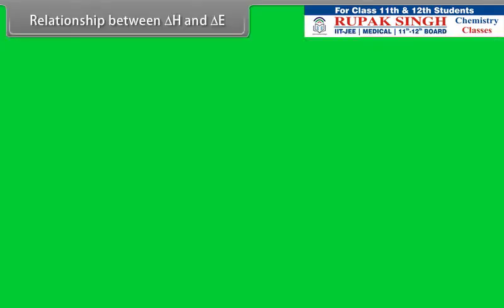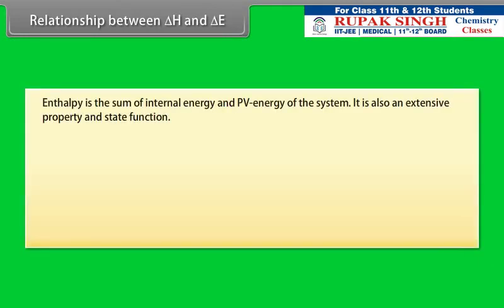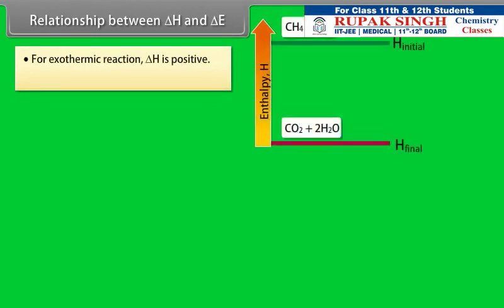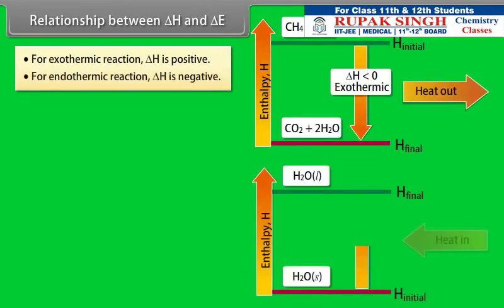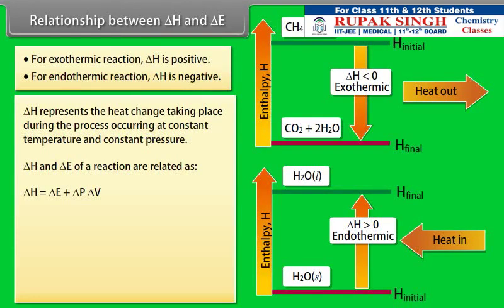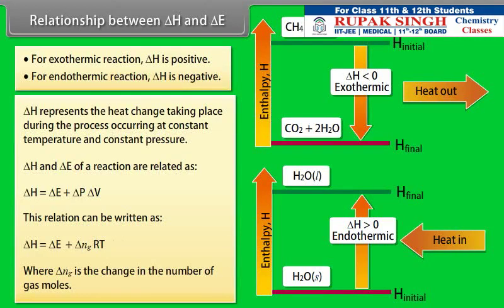Relationship between ΔH and ΔE: enthalpy is the sum of internal energy and PV energy of the system. It is an extensive property and state function, given by H = E + PV. ΔH = H2 − H1 = ΣHproducts − ΣHreactants. ΔH and ΔE are related as ΔH = ΔE + ΔPΔV, which can be written as ΔH = ΔE + ΔNgRT, where ΔNg is the change in the number of gas moles.